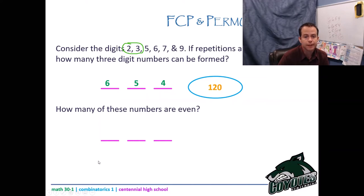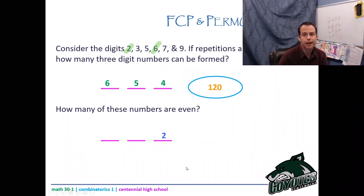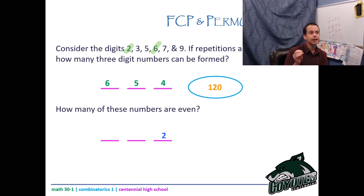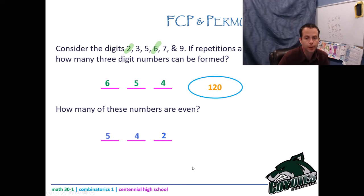What about even numbers? If I want an even number, I look at what's available: I could end in a two or a six. So I go to the back and say there are two options for the back. I don't care about the other restrictions now, except that I've used one digit — so five options for the front and four options for the second digit: 5×4×2 = 40.